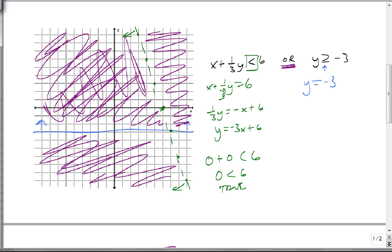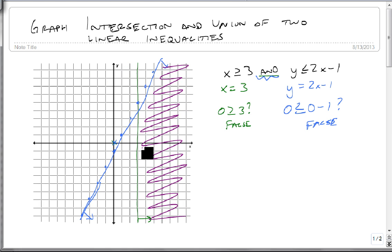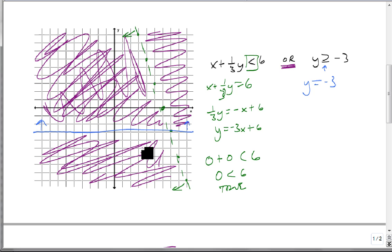For an 'and', we only get 1 region, and that's the region they both want to shade. And that's our intersections and unions of linear inequalities.